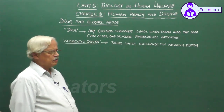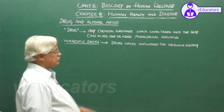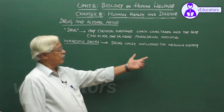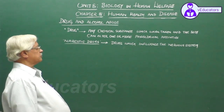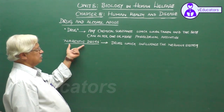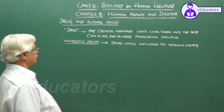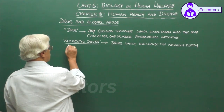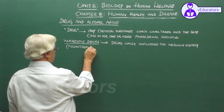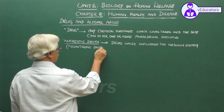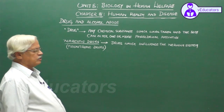We know that the nervous system influences various other systems of the body, so any influence on the nervous system — positive or negative — can in turn influence other physiological activities. So, drugs which influence the functioning of the nervous system are called Narcotic Drugs or Psychotropic Drugs.